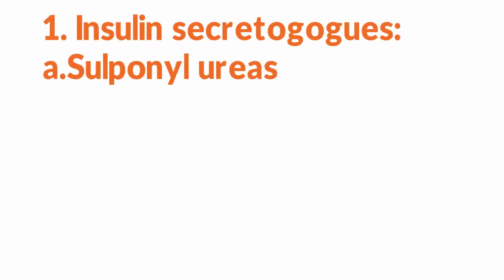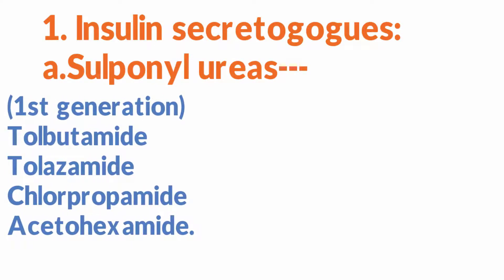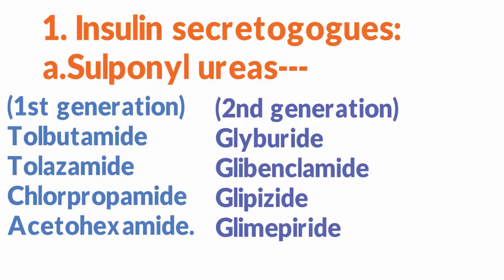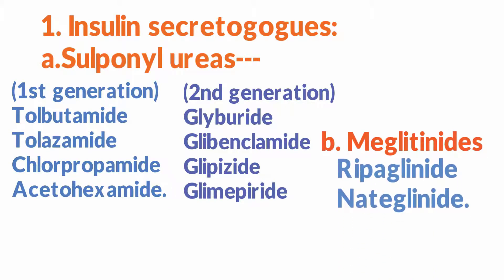Insulin secretagogues include sulfonylureas, which are divided into first generation and second generation. First generation sulfonylureas: tolbutamide, tolazamide, chlorpropamide, and acetohexamide. Second generation sulfonylureas: glipizide, glibenclamide, glipizide, and glimepiride. Meglitinides include repaglinide and nateglinide.